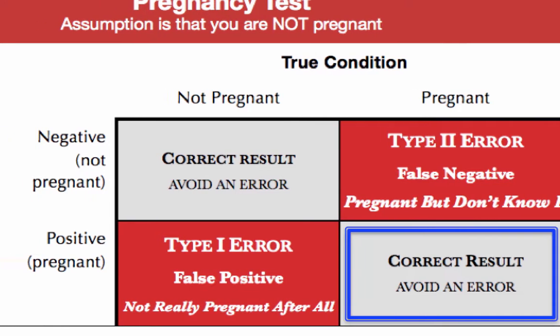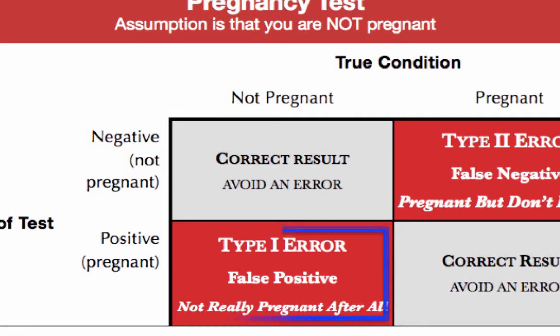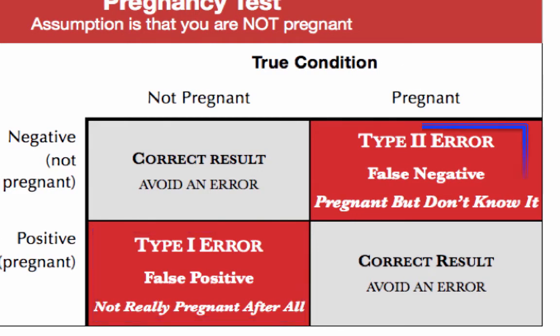Possibility three: the test incorrectly identifies a non-pregnant woman as being pregnant. This is a false positive, or a Type 1 error. Possibility four: the test incorrectly identifies a pregnant woman as not pregnant. This is a false negative, or a Type 2 error.